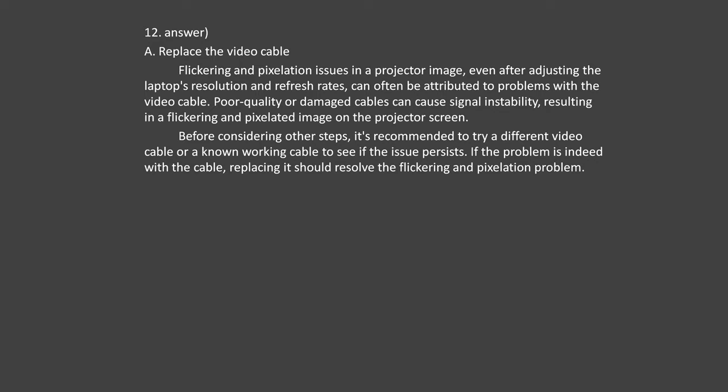Answer number 15: The correct statement is Option C — the cards will run at PCIe 2.0 speeds. When a PCIe device, in this case a graphics card, is used in a slot that supports an older version of PCIe (using a PCIe 3.0 card in a PCIe 2.0 slot), the device will operate at the speed of the older version. The PCIe 3.0 graphics cards will operate at PCIe 2.0 speeds when installed in systems that support PCIe 2.0. This is due to backward compatibility of PCIe slots, which allows newer devices to work in older slots but limits them to the older slot's capabilities.